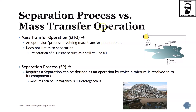Let us define a separation process versus a mass transfer operation. A mass transfer operation (MTO) is an operation or process involving mass transfer phenomena. It does not limit to only separation. For instance, evaporation of a substance that has been spilled is a case of MTO — if you spill oil in the ocean, it will not mix, and eventually the oil will evaporate, which is a mass transfer operation.